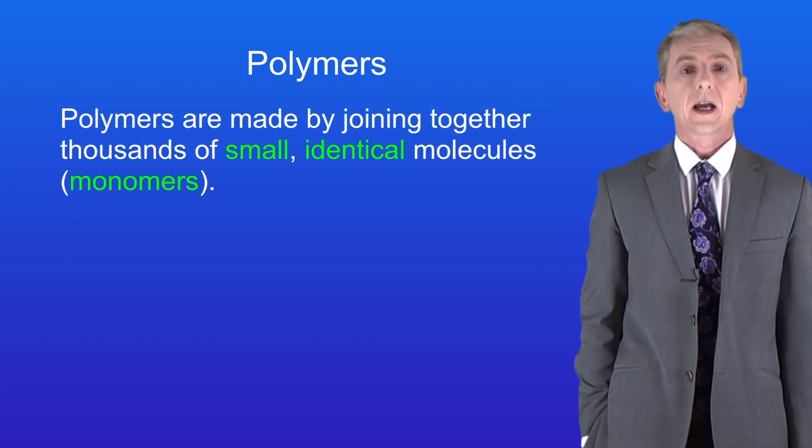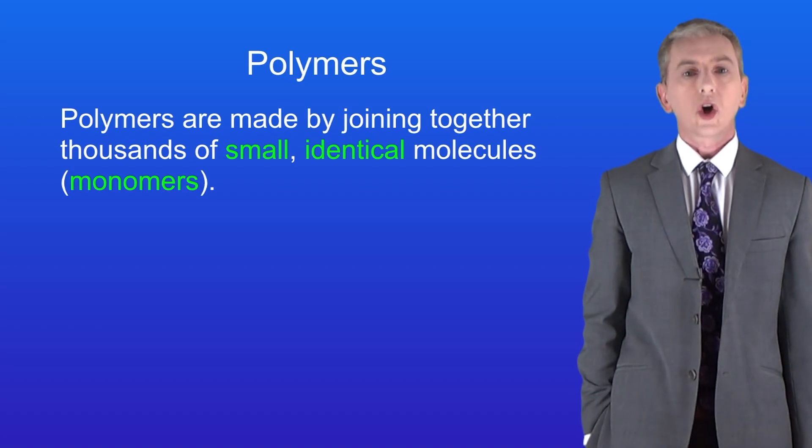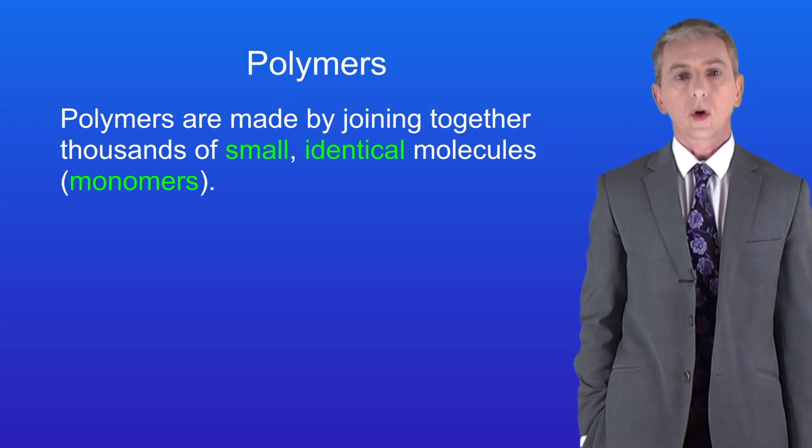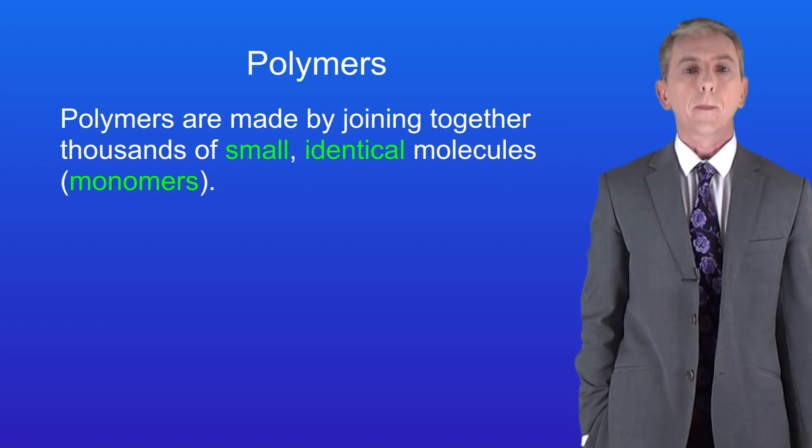The first key idea that you have to get is that polymers are very large molecules. They're made by joining together thousands of small identical molecules and we call these identical molecules monomers.